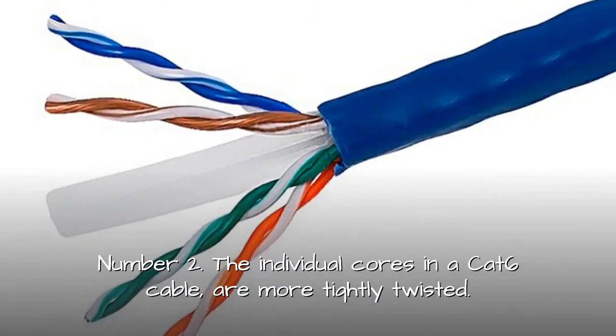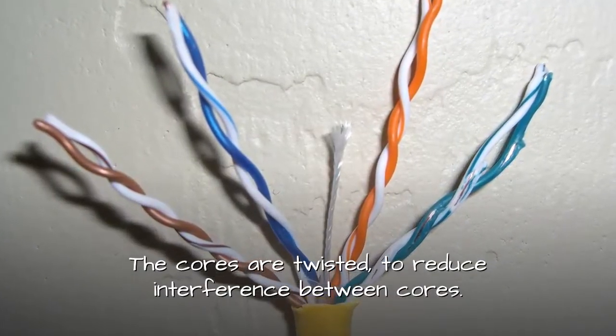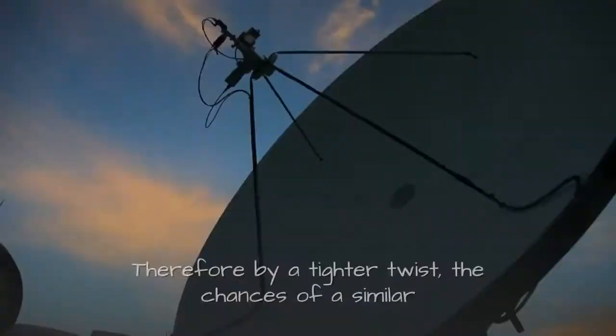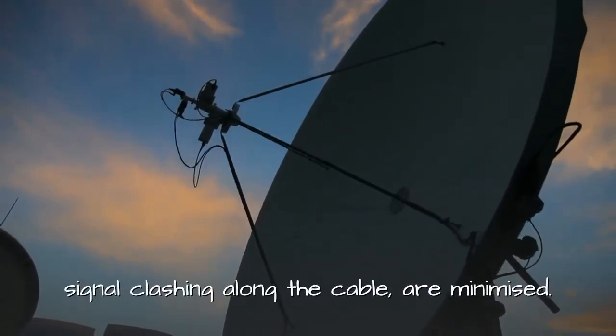Number 2: The individual cores in a CAT6 cable are more tightly twisted. The cores are twisted to reduce interference between cores. Therefore, by a tighter twist, the chances of a similar signal clashing along the cable are minimized.